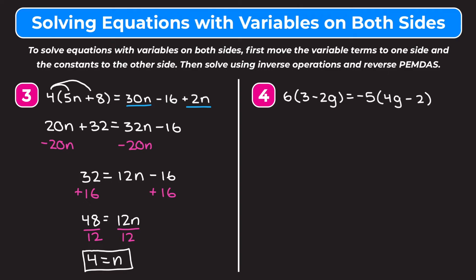Example 4 involves distributing on both sides of our equation. We need to distribute the 6 and the negative 5 first before moving variable terms. So 6 times 3 is 18, and 6 times negative 2G is negative 12G. On the right side, negative 5 times 4G is negative 20G, and negative 5 times negative 2 becomes positive 10.